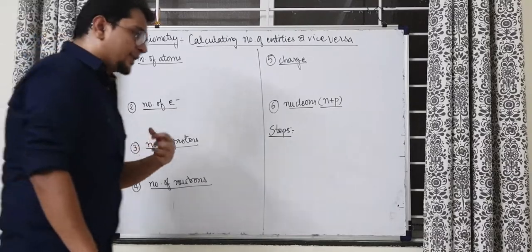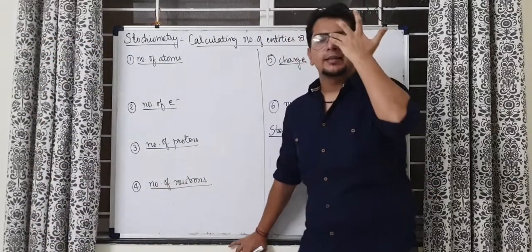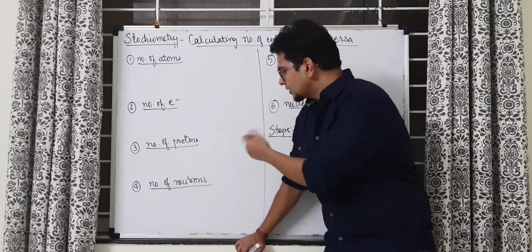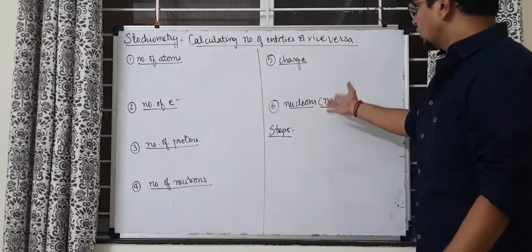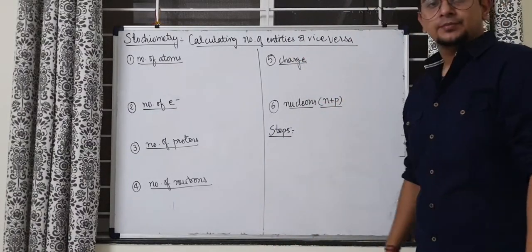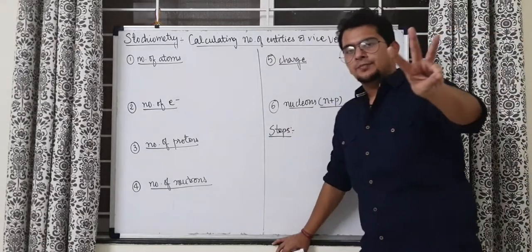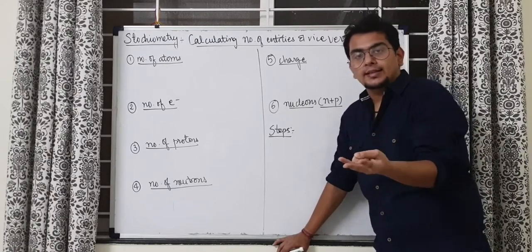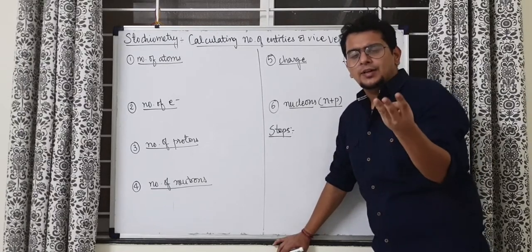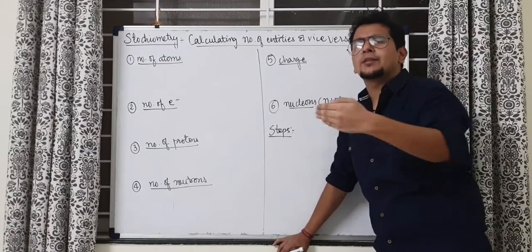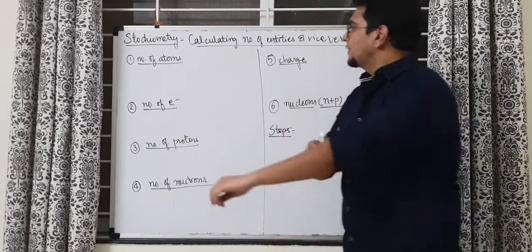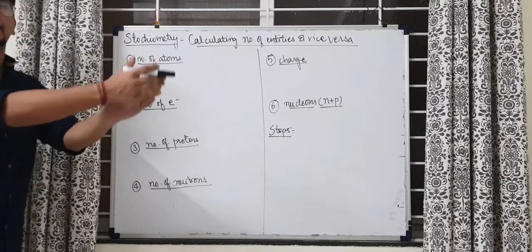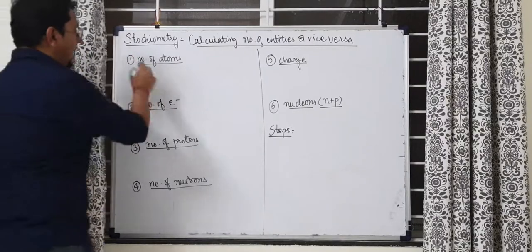So what they will give you? They will give you a sample and they will ask you the number of entities in that sample. Entities means things. Those things can be atoms, electrons, protons, neutrons, maybe nucleons. Nucleons is total neutron plus proton or maybe charge. So they can give you the sample in three ways. They can give you mass, they can give you number or they can give you volume of the gas at STP. Also they can as well give you the moles directly for a very straightforward simple question. So to get this kind of a question, firstly, make sure that you remember what is the thing you have to know before entering into moles.